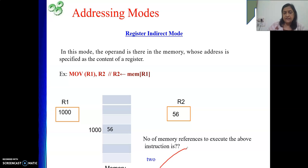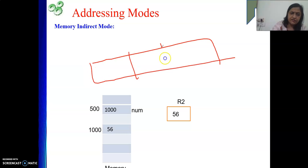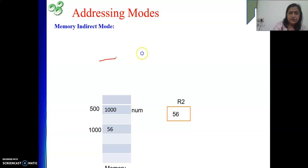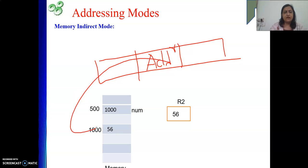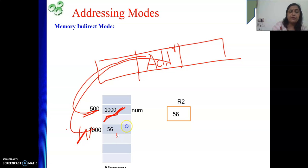Now I will move to the next addressing mode: memory indirect mode. Memory indirect mode is similar to the concept of pointers in high-level language. In memory indirect mode, in your instruction you will be given one address — this address will be part of your IR. At this address in memory, we will not get the data. One instruction has one address as part of it — let's say this address is 1000. At 1000, the address stored is say 500. At address 500, we will get another address, and at that address we are going to get our operand.